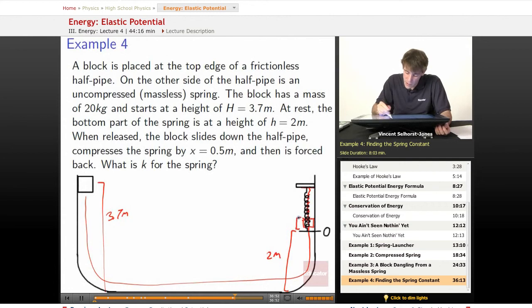So it will wind up having compressed this by an additional 0.5 meters, and then it will be forced back because that's the maximum amount that it makes to. If that's the maximum amount that it makes it, what do we know just before it starts being forced back?